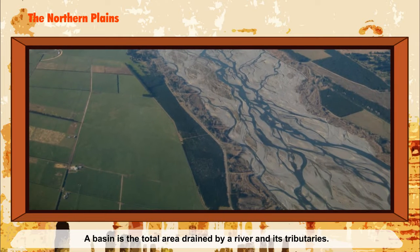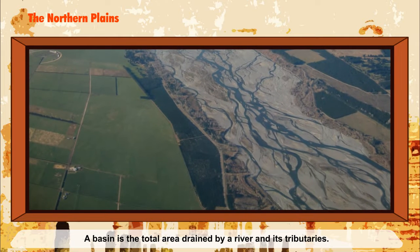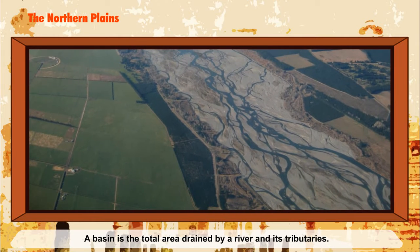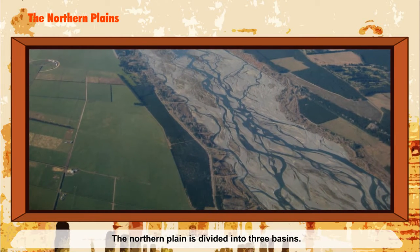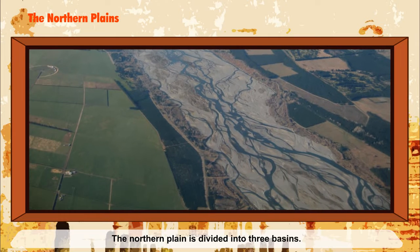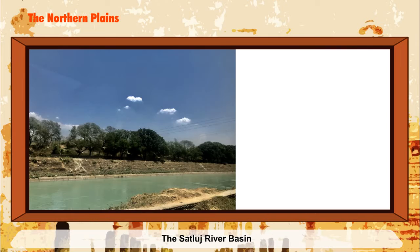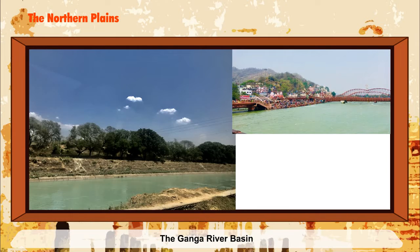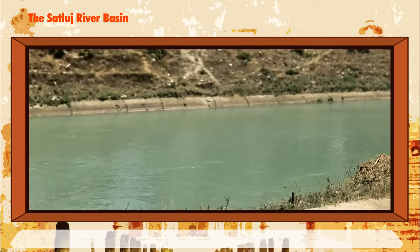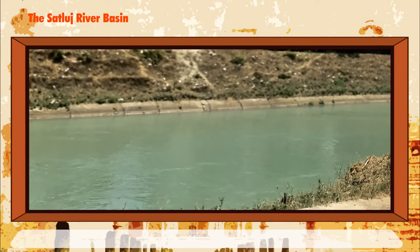A basin is the total area drained by a river and its tributaries. The Northern Plain is divided into three basins: the Sutlej River Basin, the Ganga River Basin, and the Brahmaputra River Basin.